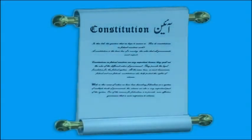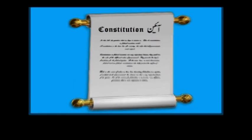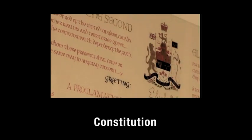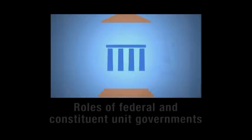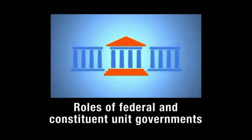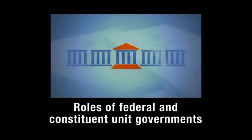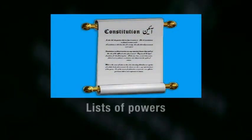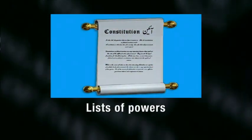A federal country is usually founded on a set of basic laws or a constitution. Constitutions in federal countries outline the roles and responsibilities of the central or federal government and of the constituent unit governments. Constitutions can do this in many different ways. They sometimes have exhaustive lists of powers for each order of government, and at other times there is a list of powers for one order while the other gets everything not named.